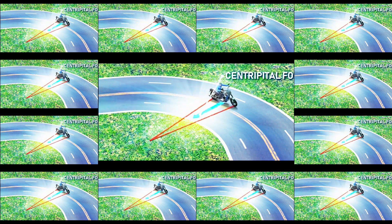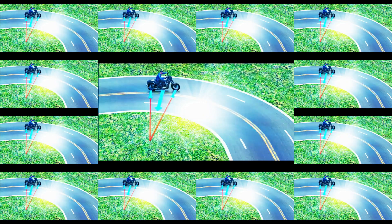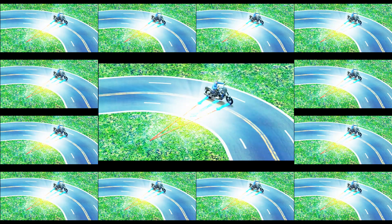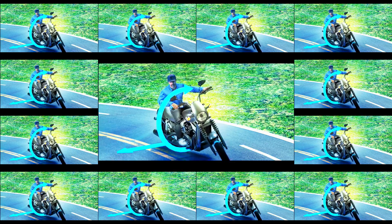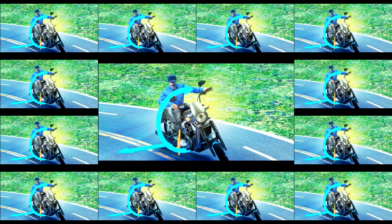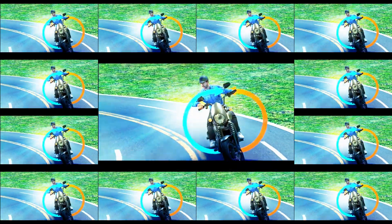Centripetal force is needed by any object to make a turn. This centripetal force is provided by the frictional force between the tire and the road. Let's do a torque balance on the motorcycle at one point during the turn. You can see that the vehicle is not stable in this position — the torque produced by the frictional force will turn the vehicle down. The only way to balance this torque is by leaning your motorcycle inward. You can see how the gravitational and normal forces act when the motorcycle is in an inclined position.